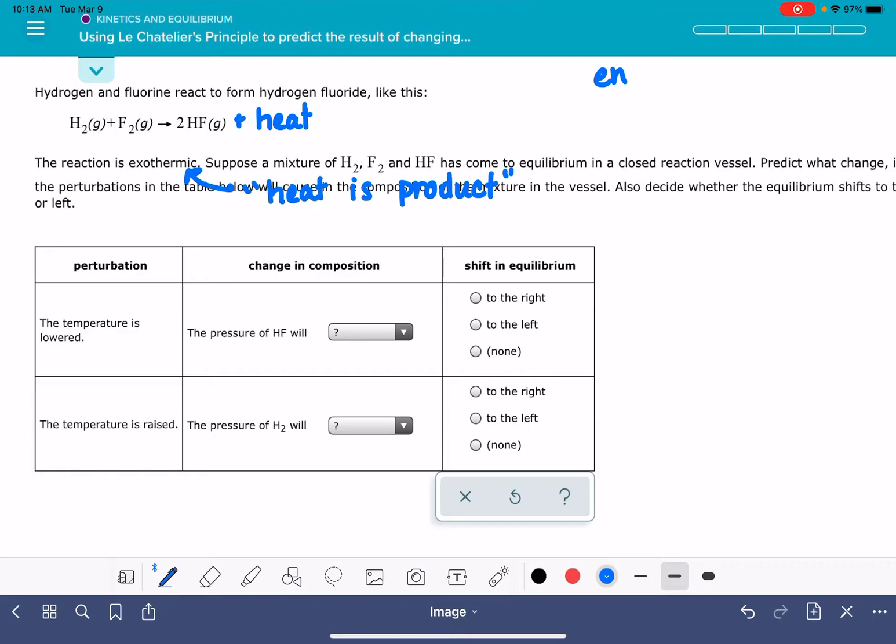If the reaction was endothermic, then I want you to think about it as heat being a reactant, because in an endothermic reaction we have to supply heat. Heat needs to go into the system.